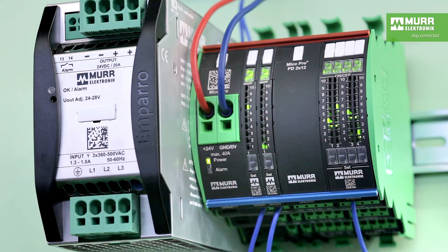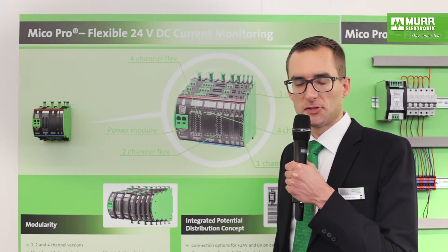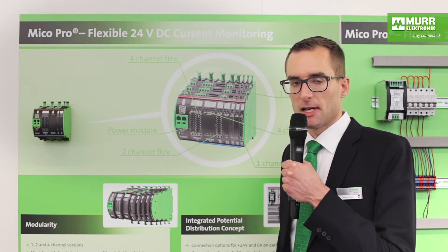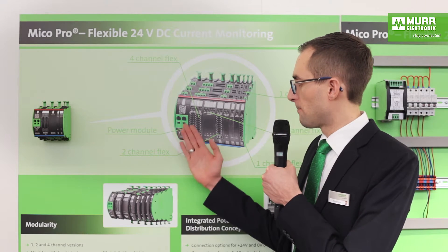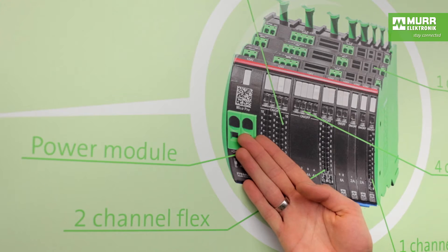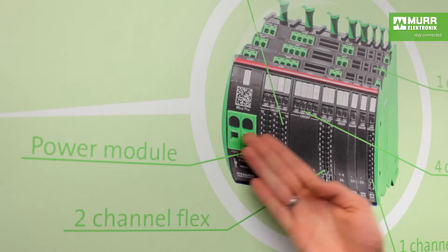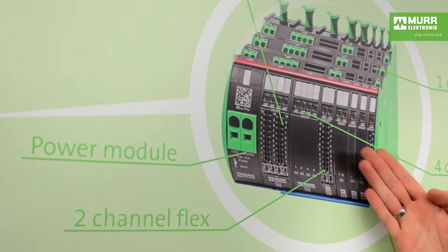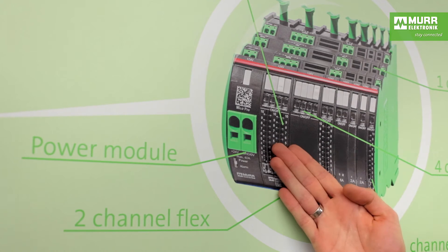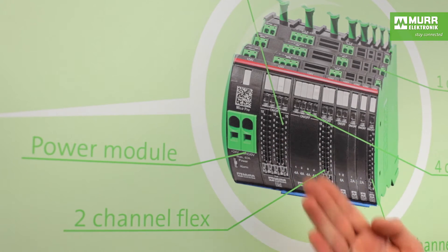MECO PRO consists of individual system components such as the power module, where you connect your power supply, single channel MECO modules, two channel and four channel modules.